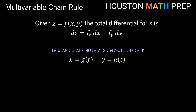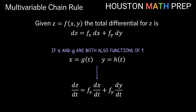The idea with the multivariable chain rule is in the case where these variables are also in terms of some other variable. One of the most common cases would be if those variables are functions of t. We then ask: what would the derivative of z be with respect to t? Taking the total differential and dividing by dt gives us a formula for dz/dt. First we differentiate with respect to x treating y as a constant, and multiply by dx/dt. Then we add the partial derivative with respect to y treating x as a constant, multiplied by dy/dt.